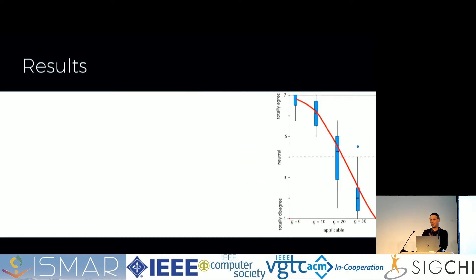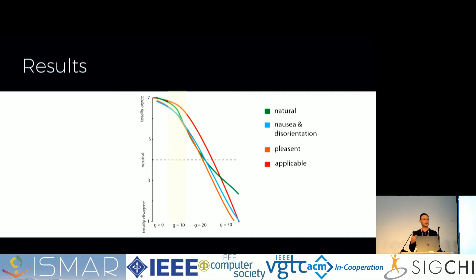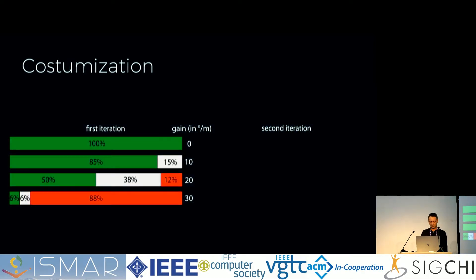All of these ratings were quite similar. When put together in one graphic, we see an area around 10 degrees per meter which is still comparable to no manipulation — although users will perceive this manipulation. We have 20 degrees per meter, which is still applicable for most participants, and 30 degrees per meter, which we should not apply.